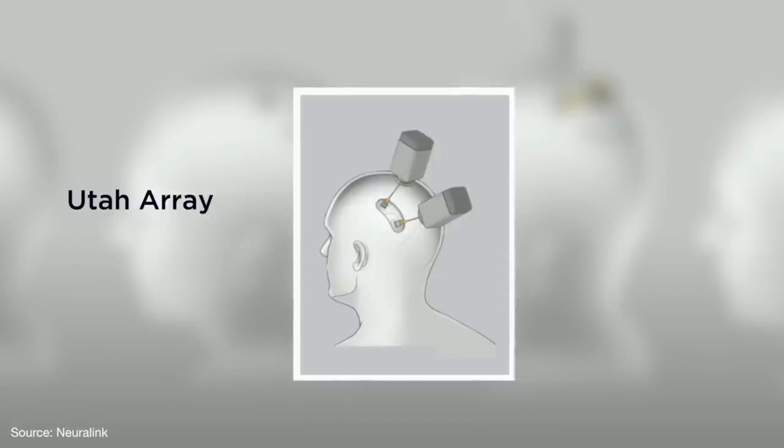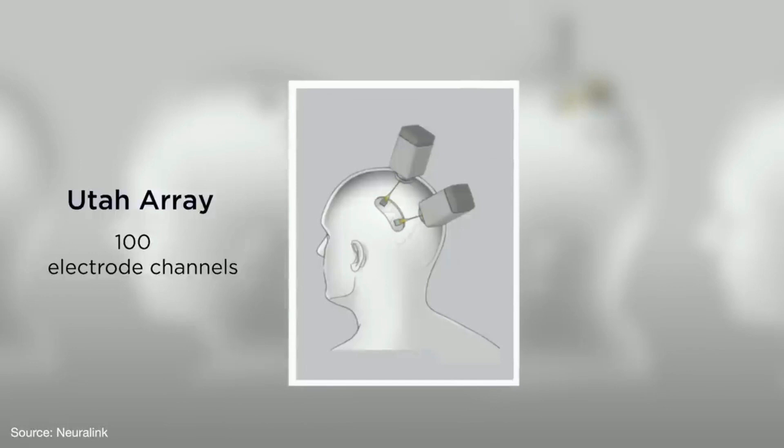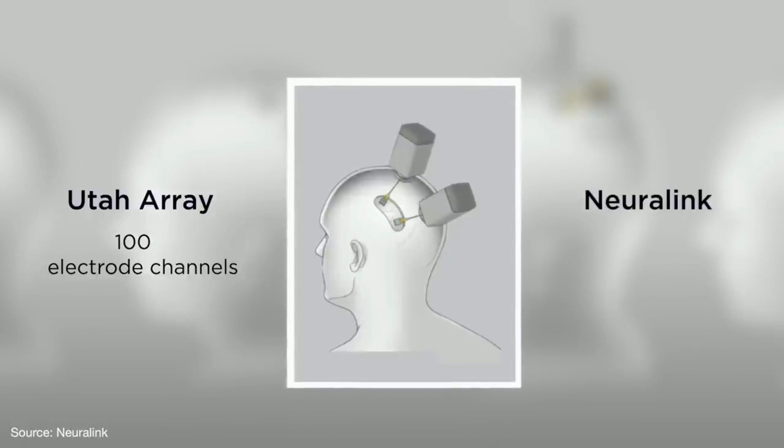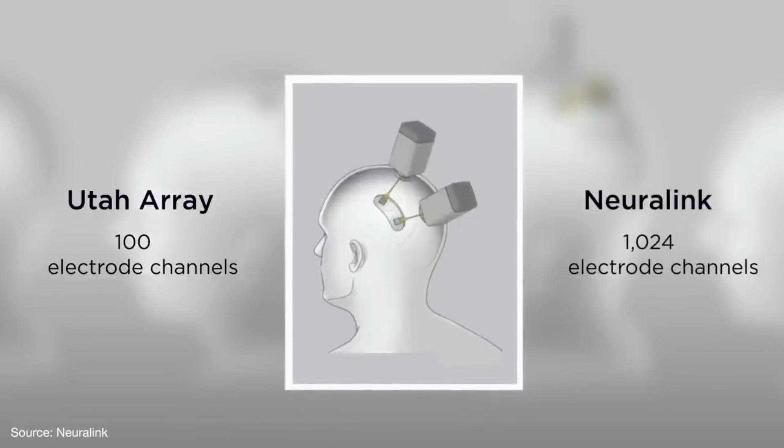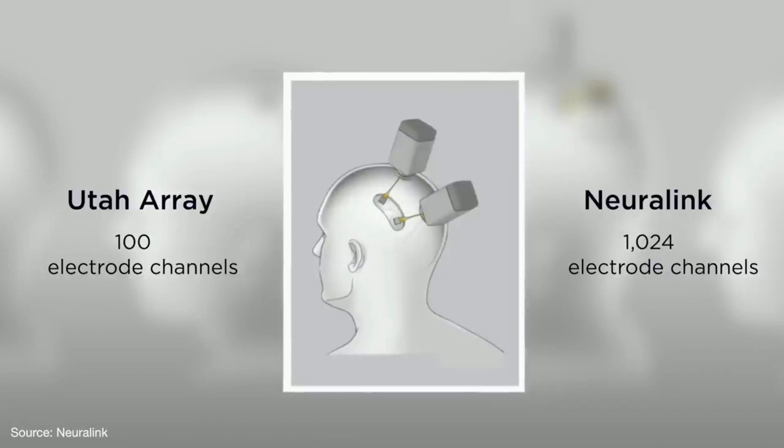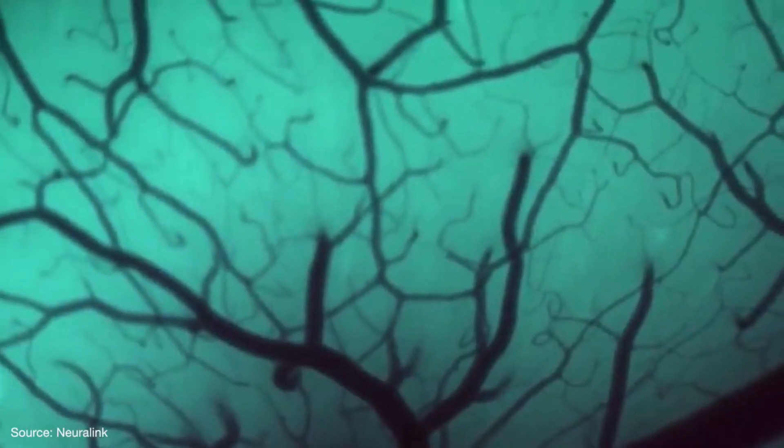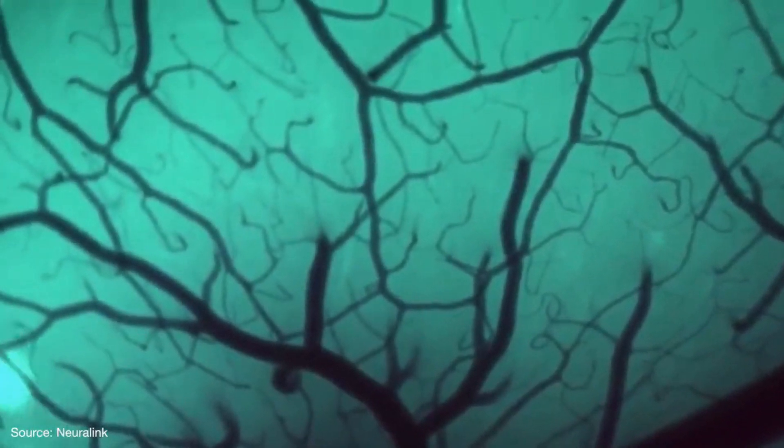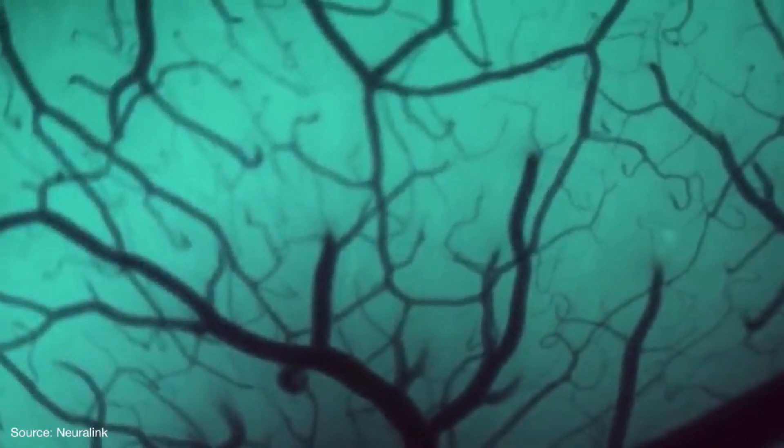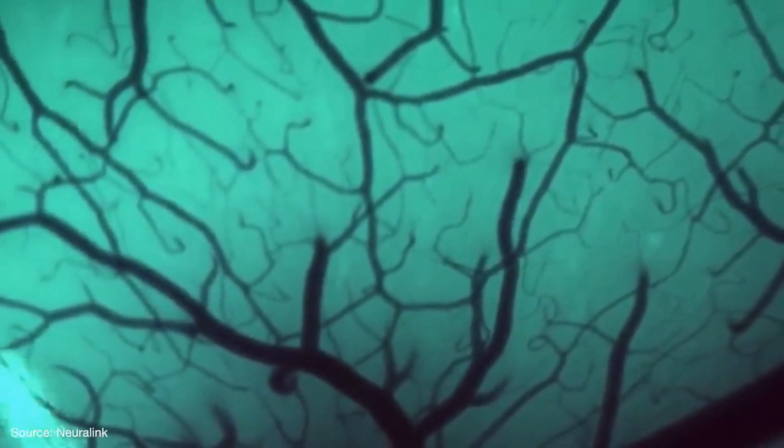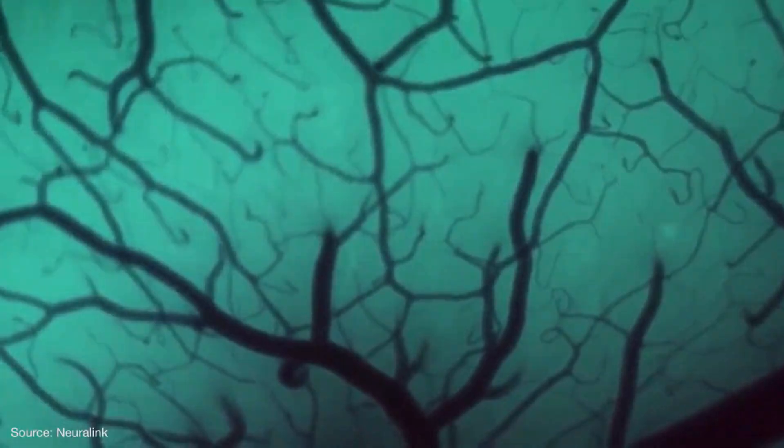These electrodes can then understand the electrical signal in your brain and translate them into an algorithm that a machine can read. This way Neuralink will be able to read what you are thinking and find a way for you to talk to machines without even opening your mouth, so no more calling out OK Google or Alexa. The goal of the N1 chip is to record and stimulate electrical spikes inside your brain. You'll also be able to learn different skills using a dedicated app.